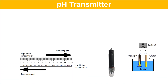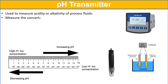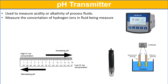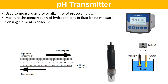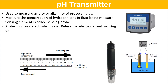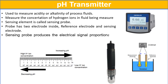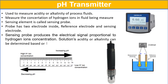The pH transmitter is used to measure the acidity or alkalinity of process fluid. It measures the concentration of hydrogen ions in the fluid. The sensing element is called a sensing probe, which has two electrodes inside: the reference electrode and sensing electrode. The sensing probe produces an electrical signal proportional to the hydrogen ion concentration, from which the acidity or alkalinity of the solution can be determined.